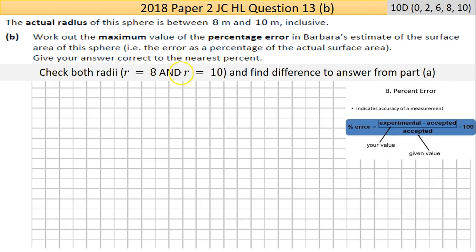Now part (b), it's tricky enough. The actual radius of this sphere is between 8 and 10, so she estimated 9. Well, maybe you should check both this range. Part (b) says work out the maximum value of the percentage error in Barbara's estimate of the surface area of the sphere. That is the error as a percentage of the actual surface area. Give your answer correct to the nearest percent.